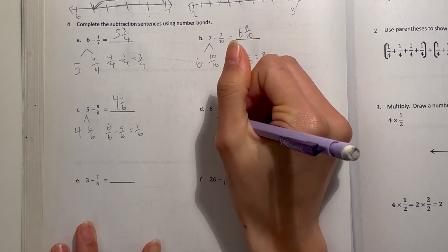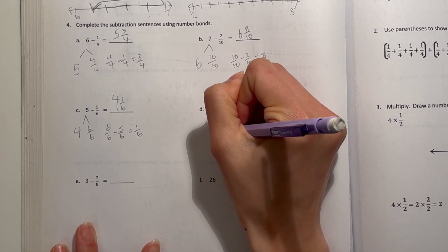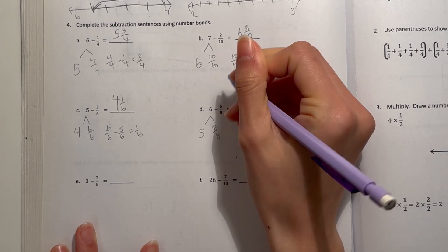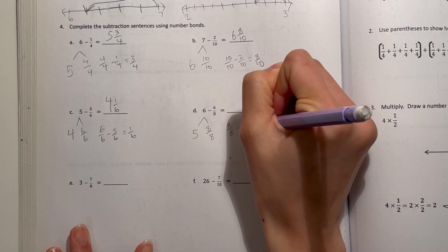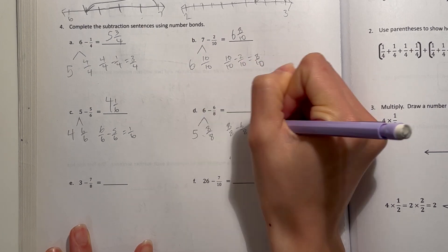D, 6 minus 6 eighths, take out 8 eighths, and that's 5 left over. 8 eighths minus 6 eighths is 2 eighths, so that's 5 and 2 eighths.